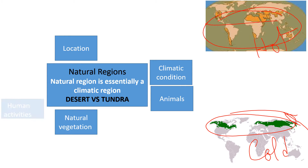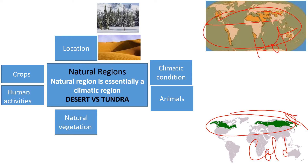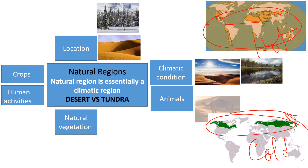With that, animals will be different, natural vegetation, human activities, crops — all will be different. Look at that location: the desert looks completely different, where we will see sand dunes, but in the tundra region we have lots of snow. In the desert area it will be very hot, whereas the tundra region will be quite cold.